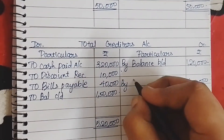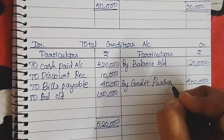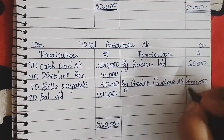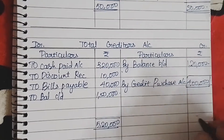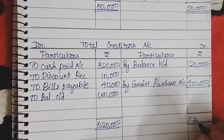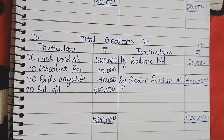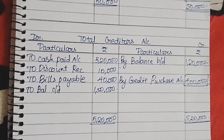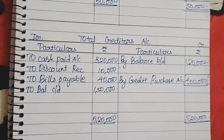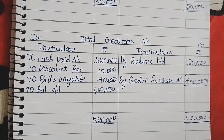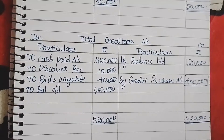So credit purchase is 4,20,000. We have completed this sum — bills receivable, bills payable, total debtors and total creditors — very easy. If you want an explanation for the format, there is a description link in two videos: in one video you will have bills receivable and total debtors, and in another video you will have bills payable and total creditors format explanation. Thank you for watching — please hit the subscribe button.